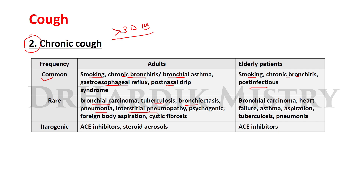Rare causes of chronic cough in adults include bronchial carcinoma, tuberculosis, bronchiectasis, pneumonia, interstitial pneumopathy, psychogenic causes, foreign body aspiration, and cystic fibrosis. In elderly patients, rare causes include bronchial carcinoma, heart failure, asthma, aspiration, tuberculosis, and pneumonia. Iatrogenic causes include ACE inhibitors and steroids in adults, and mainly ACE inhibitors in elderly patients.